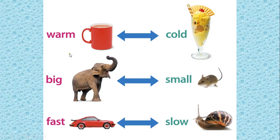Like warm and cold, big and small, fast and slow. Cold is the antonym of warm, and warm is the antonym of cold. Small is the antonym of big, and big is the antonym of small. Slow is the antonym of fast, and fast is the antonym of slow.